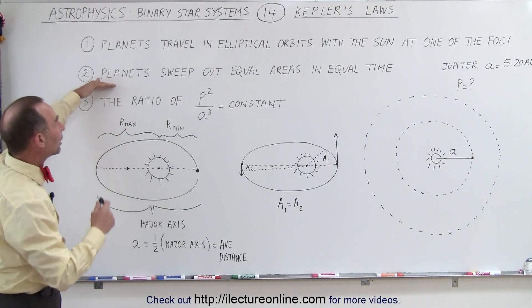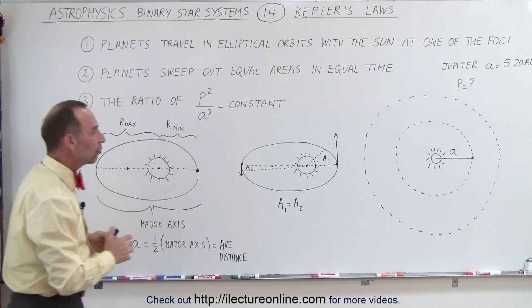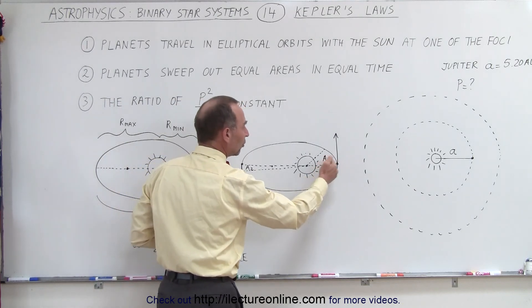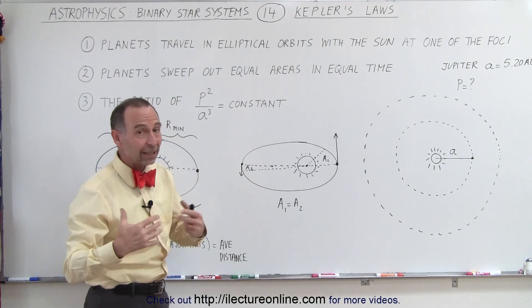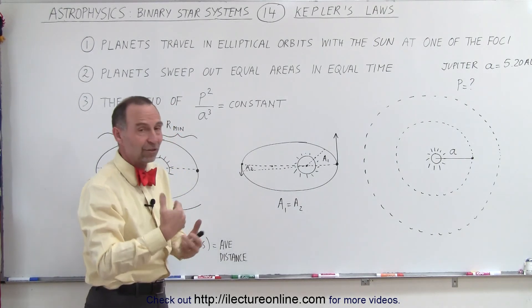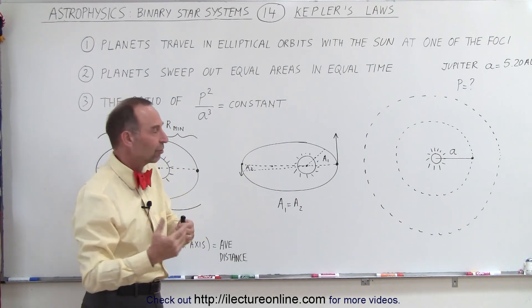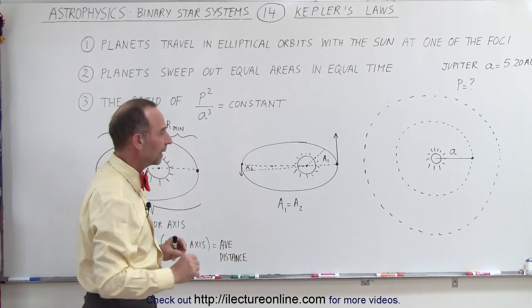The second law was that he also realized that planets moved faster when they were close to the Sun and slower when they're far away. Of course, he may not have realized why yet. He just realized they did. And now we understand that it's because of the conservation of angular momentum, and we'll get into that detail later.